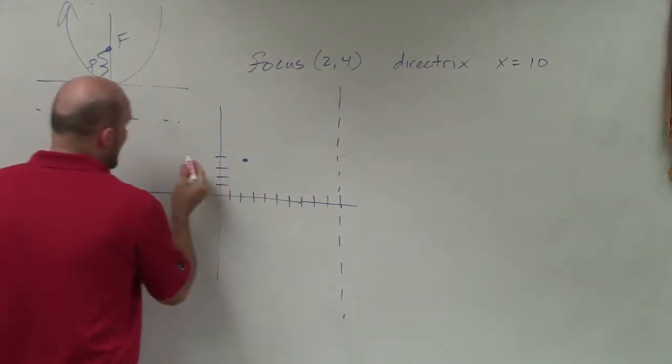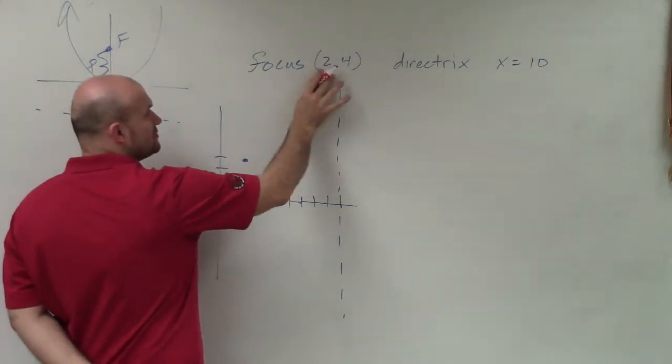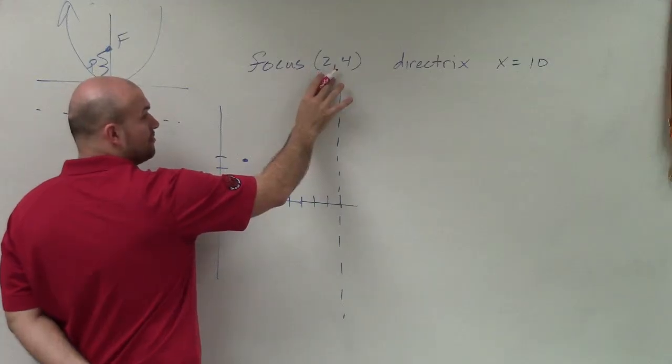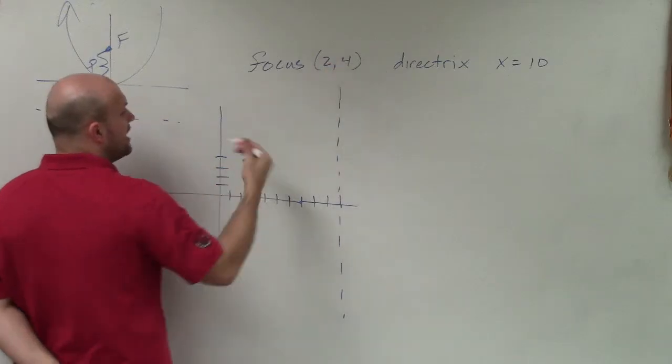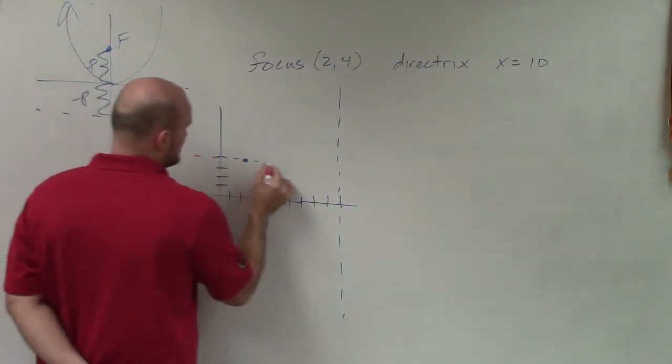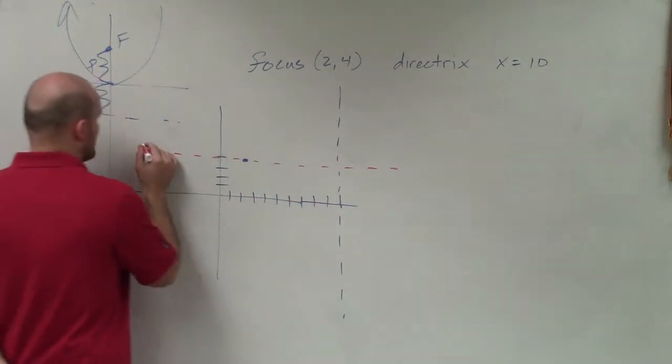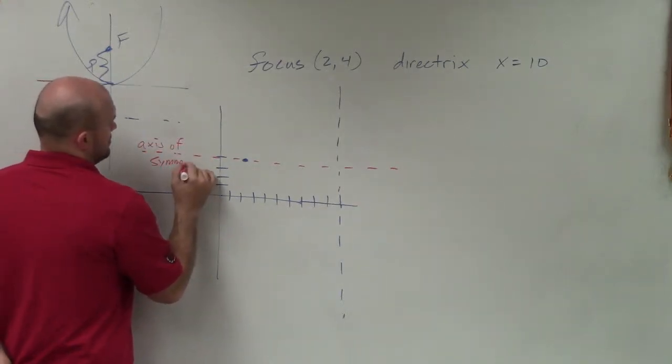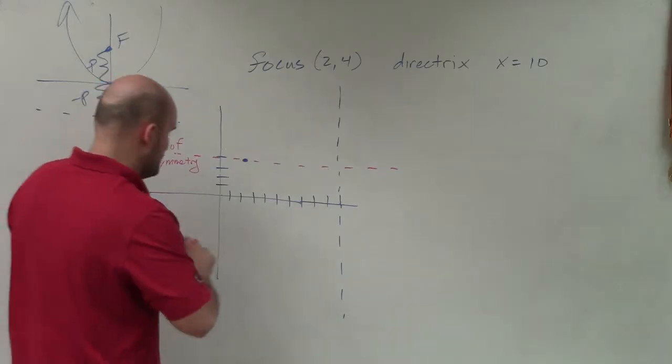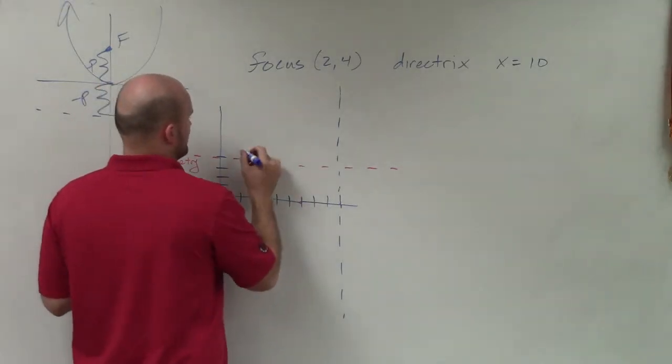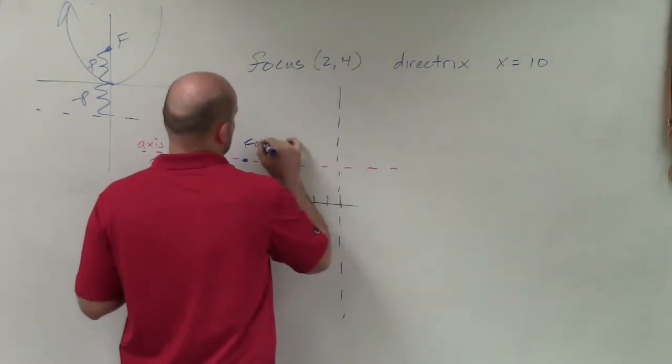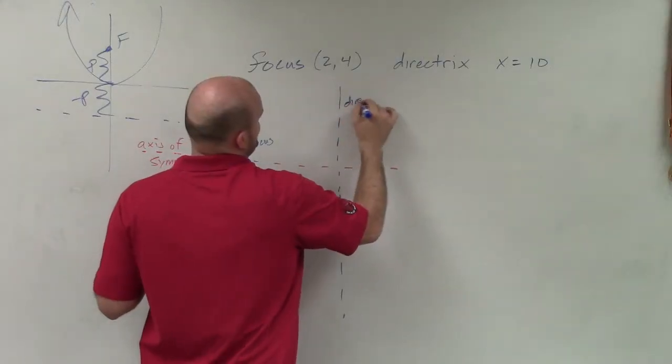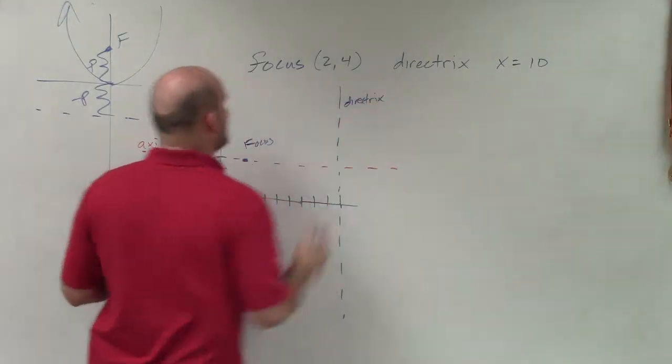So therefore, I know that my axis of symmetry runs through my point, the focus, which is (2,4), as well as going to go through my vertex. So there's my focus, and here's my directrix.